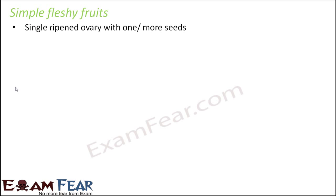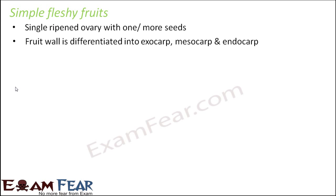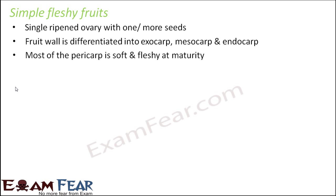Simple fleshy fruits: a single ripened ovary with one or more seeds. This is a true fruit derived from the ripened ovary. The fruit wall is differentiated into exocarp, mesocarp, and endocarp. Most of the pericarp is soft and fleshy at maturity, which is why they are called fleshy fruits — pericarp being exocarp plus mesocarp plus endocarp.